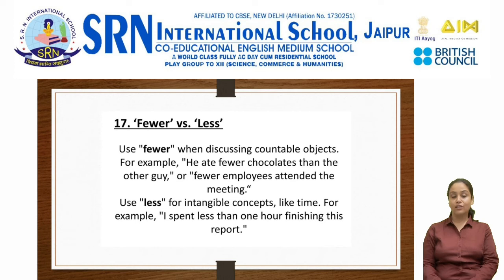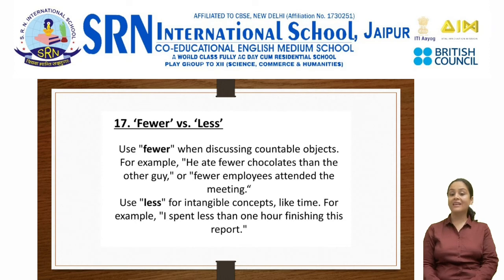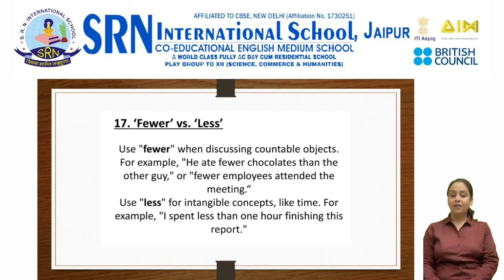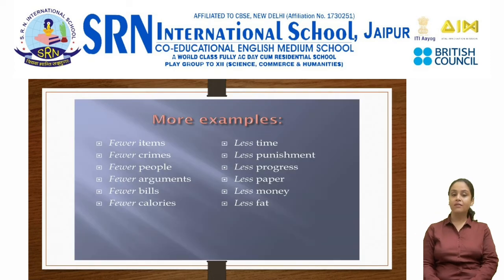The first common error is the use of fewer versus less. Use fewer when discussing countable objects. For example, he ate fewer chocolates than the other guy — chocolates is countable. Or fewer employees attending the meeting. Use less for intangible concepts like time. For example, I spent less than one hour finishing this report. Examples with fewer: fewer items, fewer crimes, fewer people, fewer arguments, fewer bills, fewer calories — all countable.